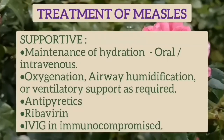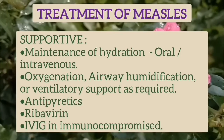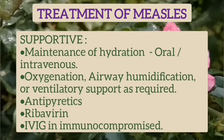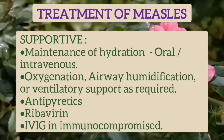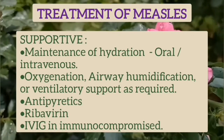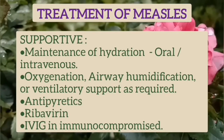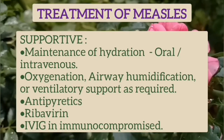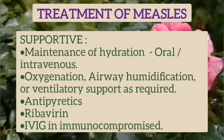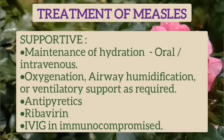Management of measles is mainly supportive: maintenance of hydration by intravenous or oral fluids. In serious cases, oxygenation, airway humidification, or ventilatory support may be required. Antipyretics are given for fever. In immunocompromised patients, ribavirin or intravenous immunoglobulin can be given.